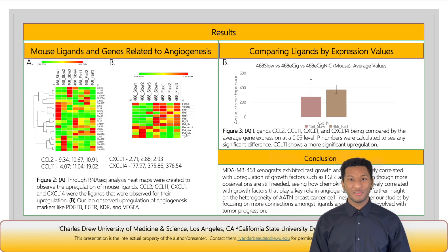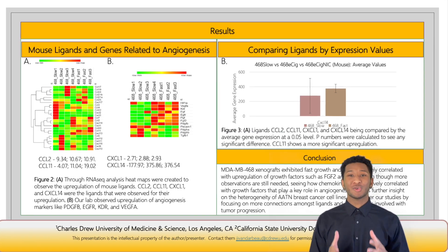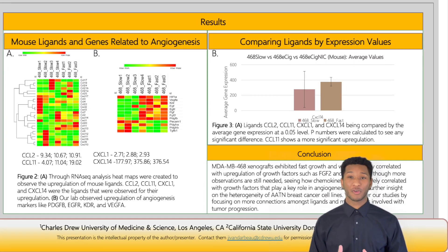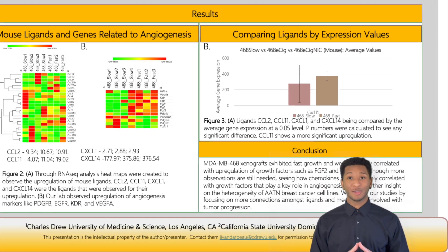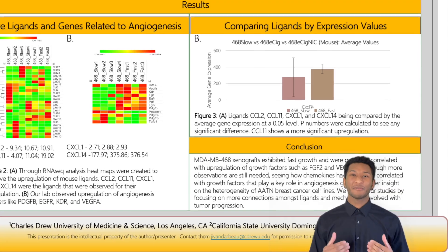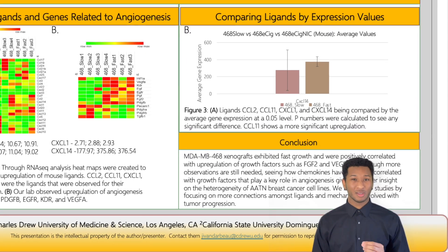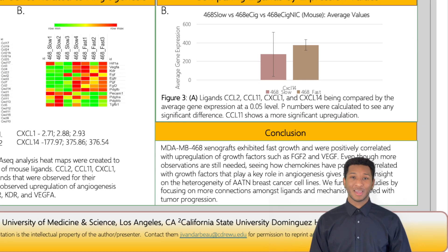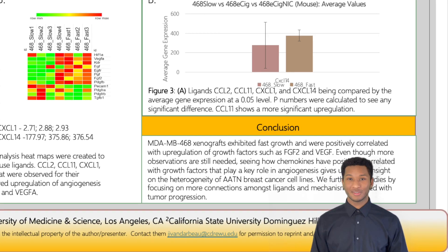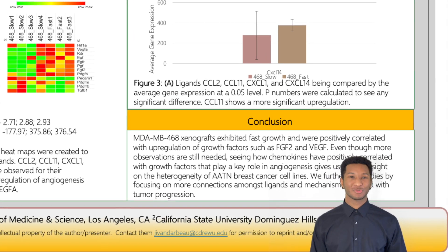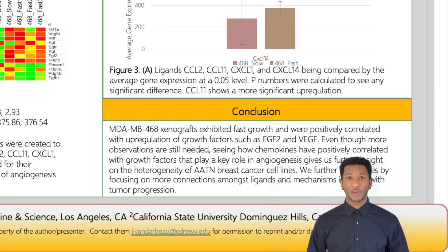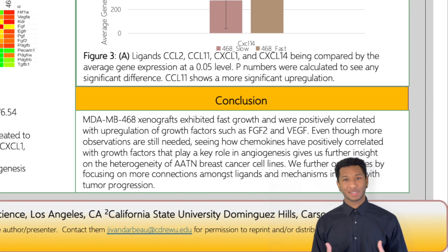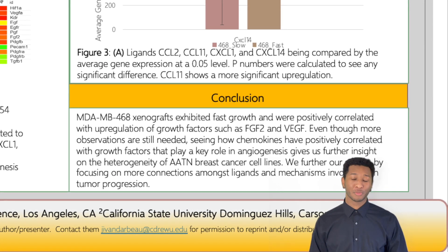In conclusion, even though more observations are still needed, seeing how chemokines have positively correlated with growth factors that play a key role in angiogenesis gives us further insight on the heterogeneity of African-American triple negative breast cancer cell lines. As we move on with our studies, we would examine more relations between the ligands and how they affect growth factors like VEGF. Understanding this relationship will help us see the mechanism of tumor progression.